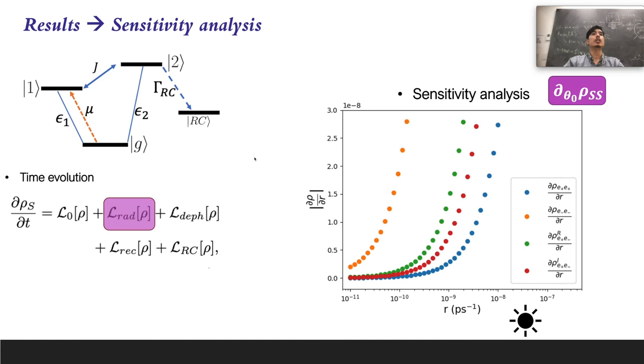For the energy transfer, the first thing we did was illustrate that we could actually do sensitivity analysis. We could know how much the steady state depends on any parameters. In this case, we study how much the incoherent light pumping rate affects each individual element of the density matrix in the steady state. As you can see, depending on the magnitude, the effect is not the same for any element of the density matrix.